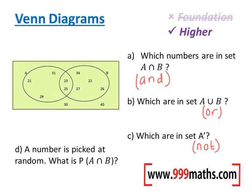So this Venn diagram's already been filled in. So A, which numbers are in set A and B? That is the middle section here, the middle section: 23 and 25 are the numbers in both sections.